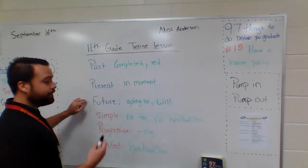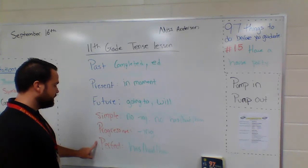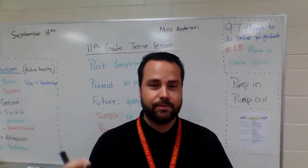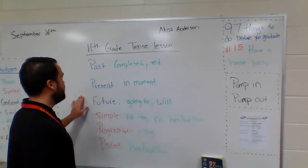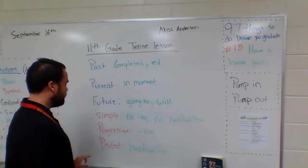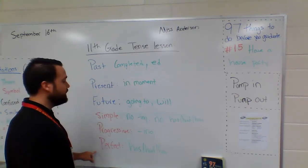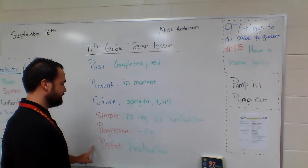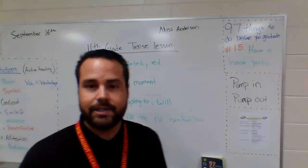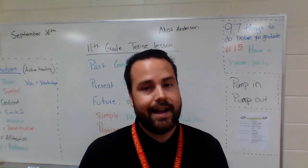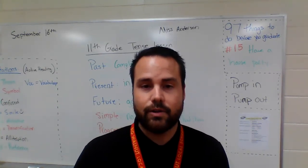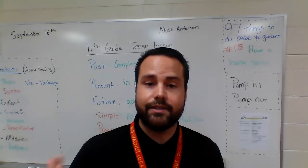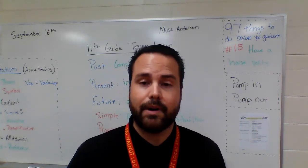We can also have a future verb that is perfect — meaning a completed action in the future, which is hard to wrap your head around, but it works. In addition, you could have any one of the three tenses combined with both progressive and perfect — so future perfect progressive, present perfect progressive, or past perfect progressive. You can never combine simple with progressive or perfect. Simple stands alone, or you can have perfect or progressive alone, or perfect and progressive together if it has both the participle and '-ing.'